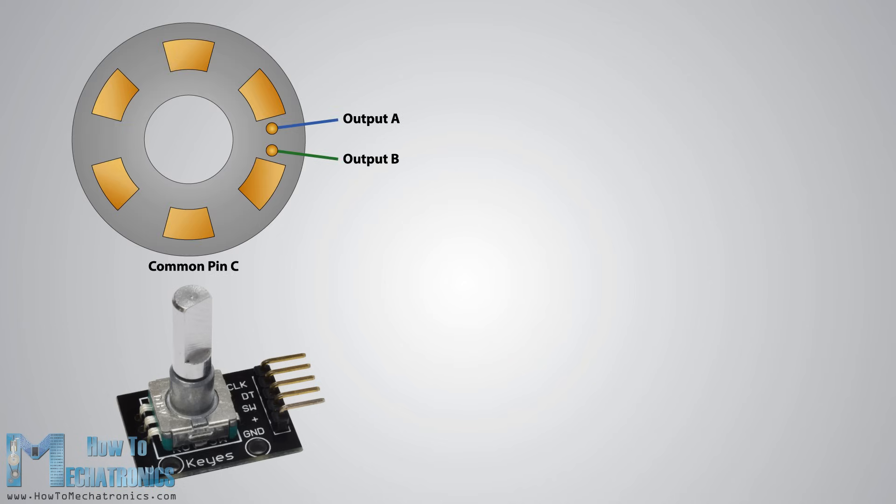Let's take a closer look at the encoder and see its working principle. Here's how the square wave pulses are generated. The encoder has a disk with evenly spaced contact zones that are connected to the common pin C and two other separate contact pins A and B as illustrated.